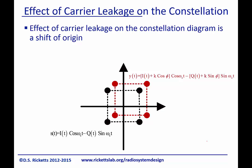Looking at a 4QAM constellation, if we have a little bit of carrier leakage, that's going to add an offset to each signal and shift our constellation in one direction. You might think a DC offset isn't a problem, but if you imagine you're a receiver where anything in a certain box is decoded as '10,' a received symbol that marches out of that box will no longer be received correctly. Typically we can shift these decision boxes to be centered around the offset signal — but if we don't know the offset, we could have incorrect reception or errors.